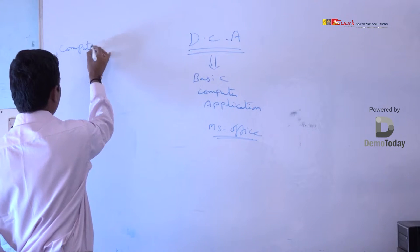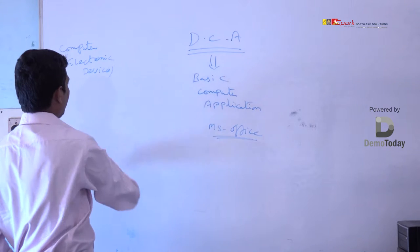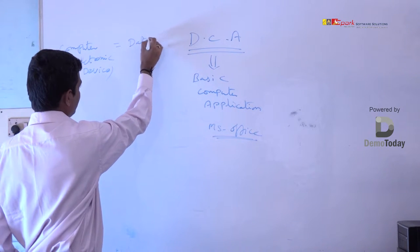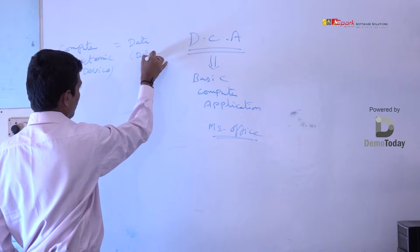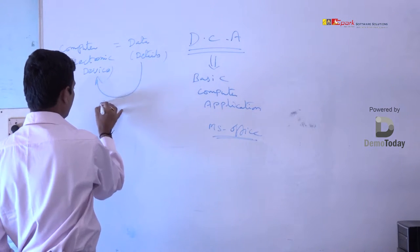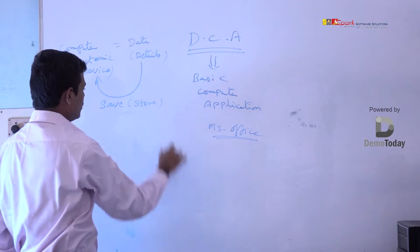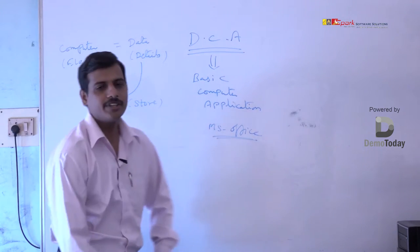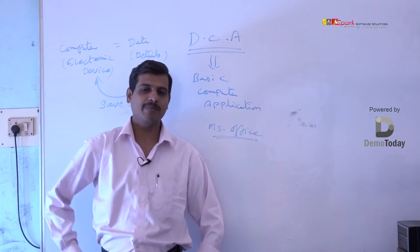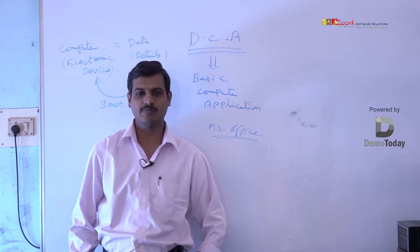A computer is actually an electronic device which is used to store data. Data in the sense details or information. So here we are going to save it — that is, store. So before going to save, what we have to do? We have to type it. For typing, we have to know what is a computer and what are its parts.